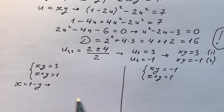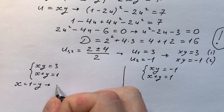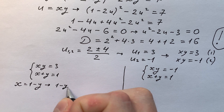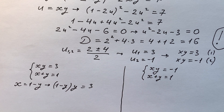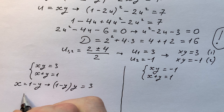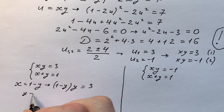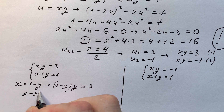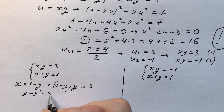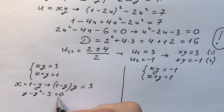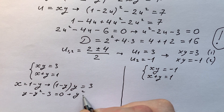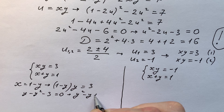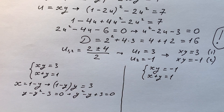For the first case: x equals 1 minus y, substituting gives (1 minus y) times y equals 3, so y minus y² equals 3, or y² minus y plus 3 equals 0. The discriminant here is negative, so there are no real solutions for this case.